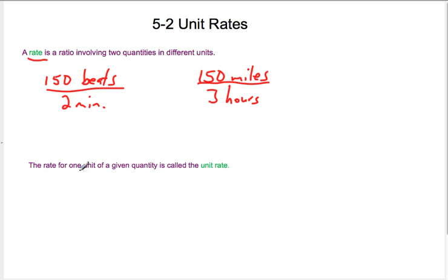A unit rate, the rate for one unit of a given quantity is called the unit rate. Well here we have beats in two minutes and miles in three hours. But we want to know the rate for one unit.